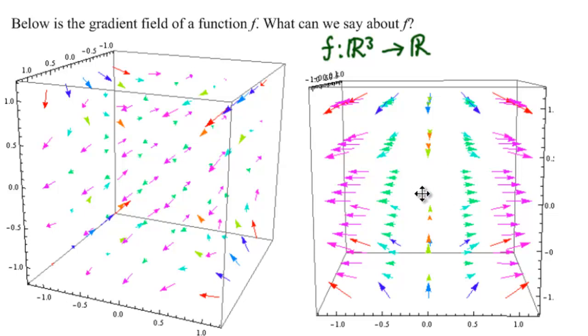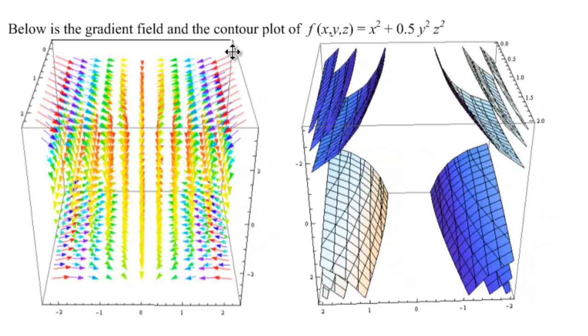We can see that there doesn't appear to be any whirly-twirly, so it probably is the gradient field of some function. It is, in fact, the gradient field of the function x² + 0.5y²z².